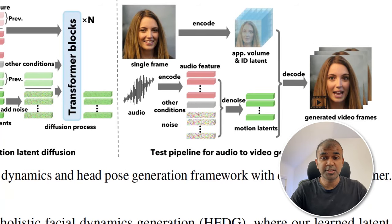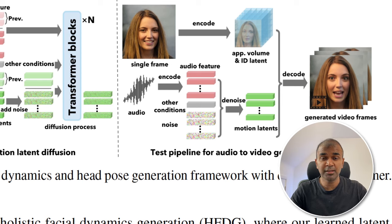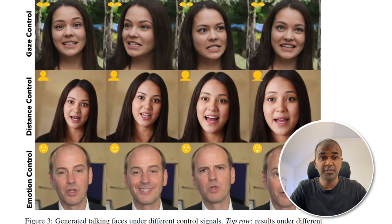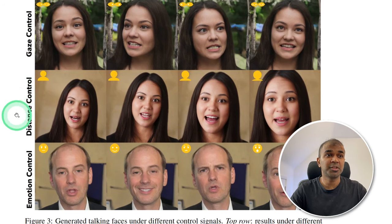The way it generates lip sync and facial movements is by providing an image and an audio. From that, it is able to generate a more realistic-looking lip sync video. You are also able to control additional features such as gaze control — meaning the eyes — as well as distance control and emotion control.